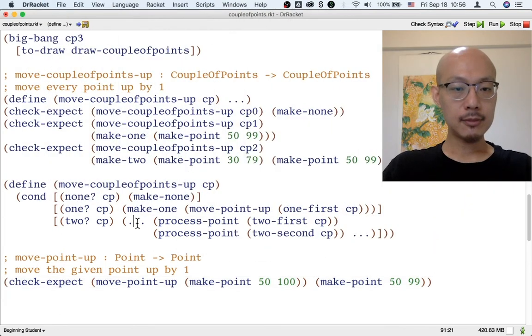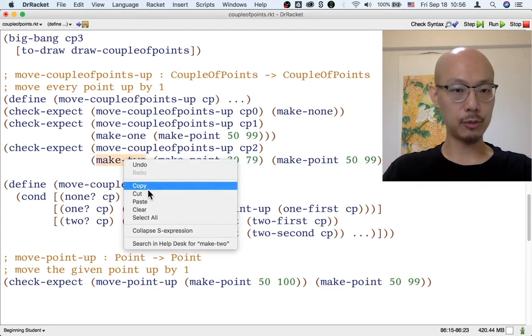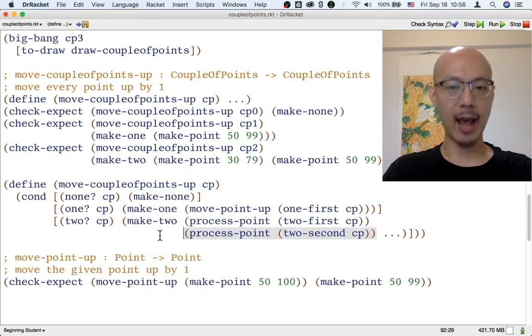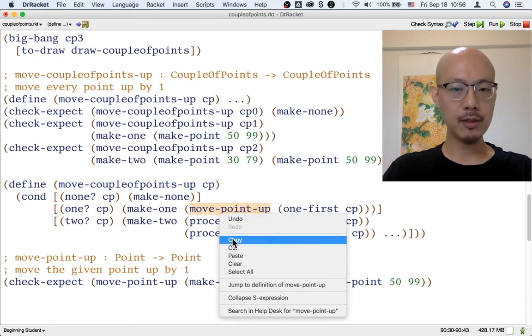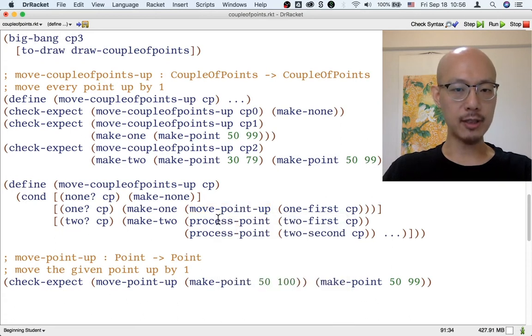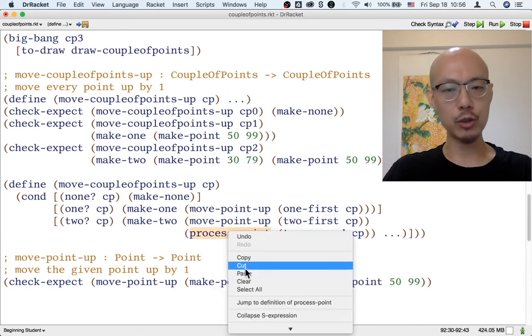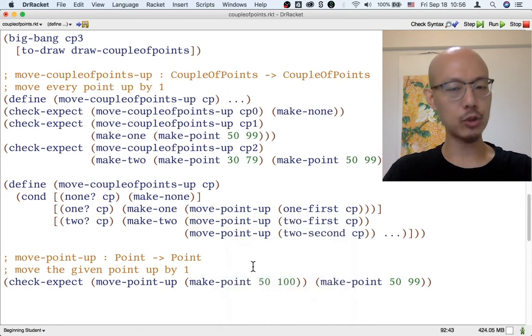Okay. But let's move on to the two case for moveCouplePointsUp. According to the example, we should use make two. So I'm just going to copy that. And now here's where it really shines to have that helper function. We're going to have two points in the result. And both points can be made by using the helper function that we're already wishing for. So we don't wish for anything else. Just one wish. We're just wishing for move point up.